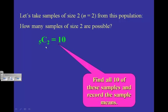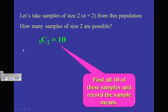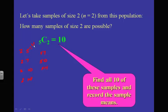Let's find all 10 of these samples and record the sample means. I could take the 2 with the 7, or the 2 with the 10, or the 2 with the 14, or the 5 with the 7, the 5 with the 10, the 5 with the 14, and so on. I could list all 10 combinations and calculate the mean of each pair: the mean of 2 and 7 is 3.5, the next pair's mean would be 4.5, then 6, and so on for all of them.